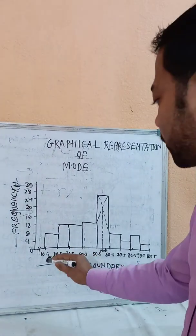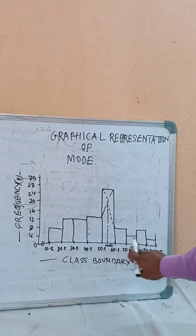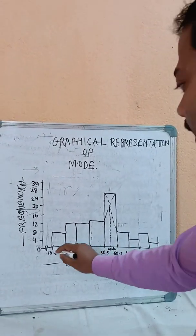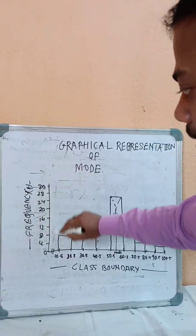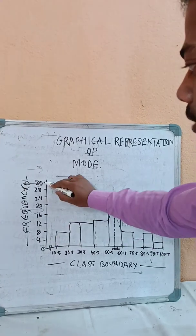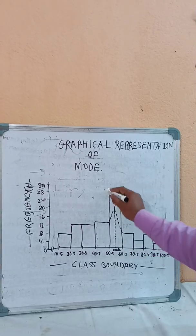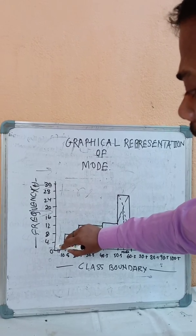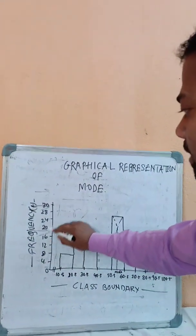On the histogram, the x-axis shows class boundaries: 10.5, 20.5, 30.5, 40.5, and so on. The y-axis shows frequency. The highest frequency value is 28 and the lowest is 3. The scale is set so that the largest bar is clearly visible.